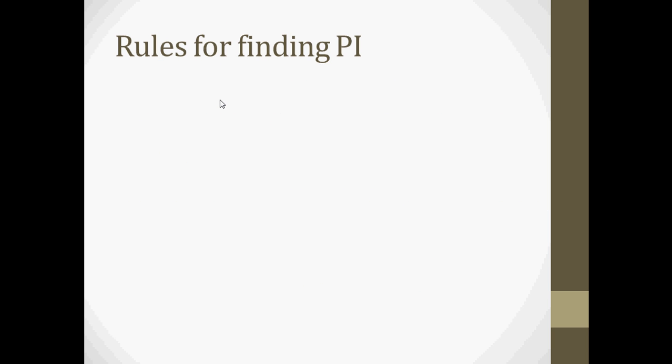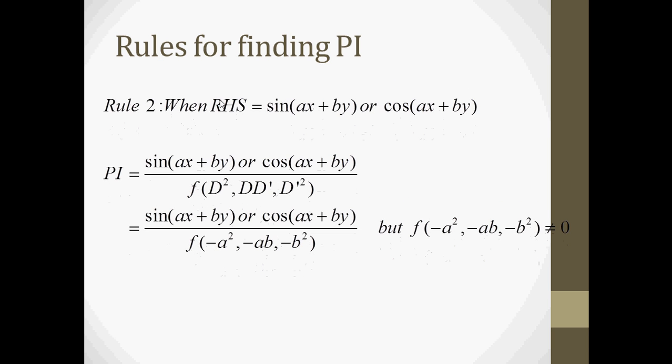The next rule for finding the particular integral is when the right-hand side is in the form sin(ax + by) or cos(ax + by). In this formula we substitute: d² replaced by minus a², dd' replaced by minus ab, and d'² replaced by minus b². But f(minus a², minus ab, minus b²) must not equal 0.